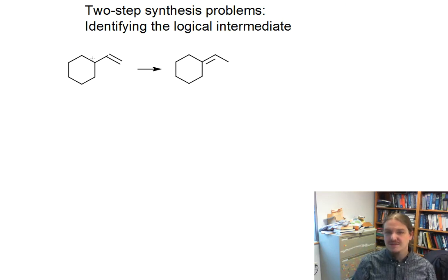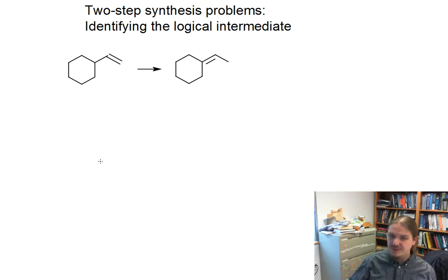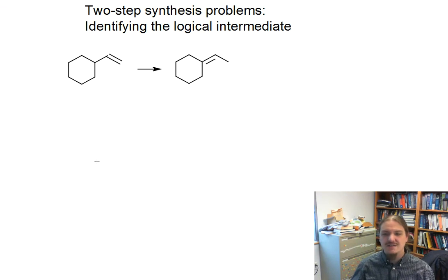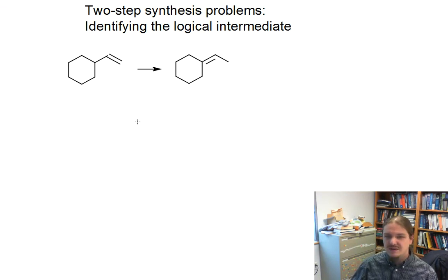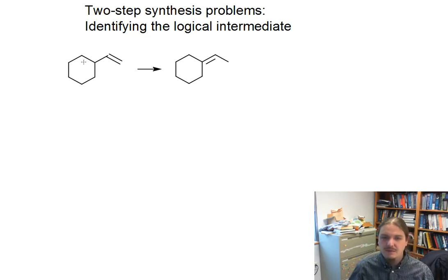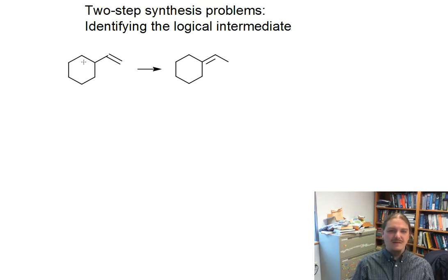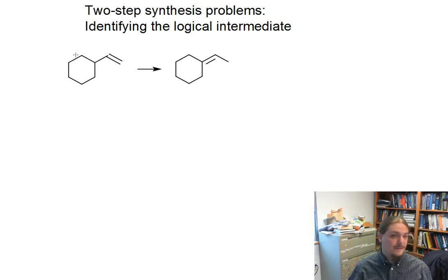I want to do two examples in this video. One, we're going to talk about moving a functional group, and then we're going to talk about a second example where we're changing the carbon skeleton. So let's start by moving a functional group. What if I want to do this transformation where we're going to change vinyl cyclohexene into ethylidine cyclohexene? We're moving the alkene one position towards the cyclohexene ring.